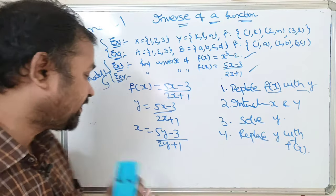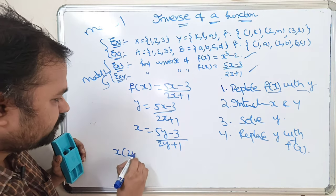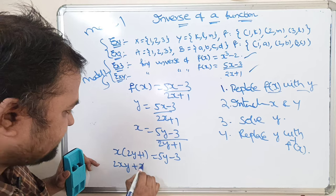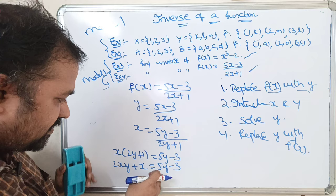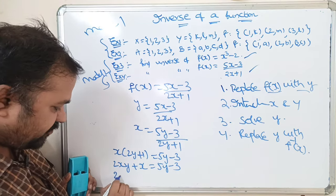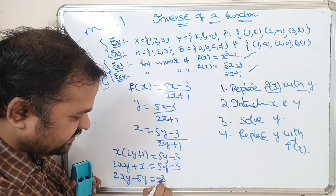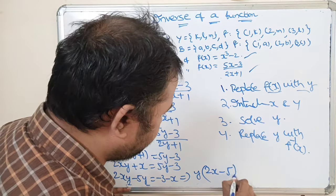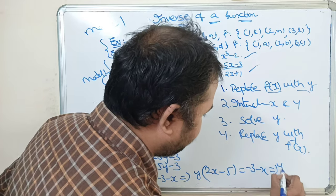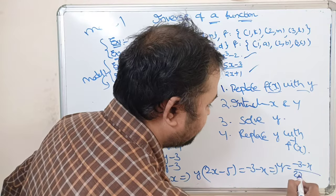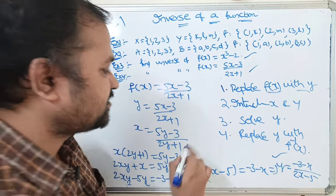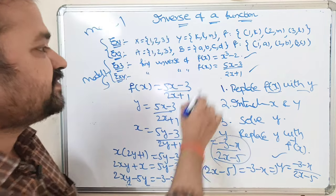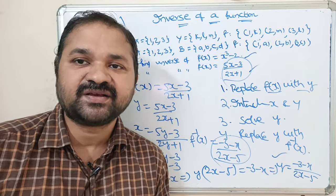So x = (5y - 3) / (2y + 1). Step 3: solve for y — multiply both sides: x(2y + 1) = 5y - 3, giving 2xy + x = 5y - 3. Rearranging: 2xy - 5y = -3 - x, and factoring out y: y(2x - 5) = -3 - x, so y = (-3 - x) / (2x - 5). Step 4: f⁻¹(x) = (-3 - x) / (2x - 5). Likewise we can solve the inverse of a function very easily.